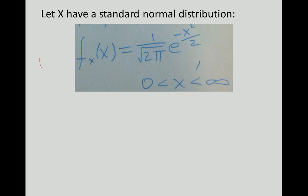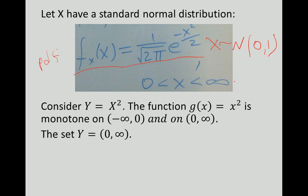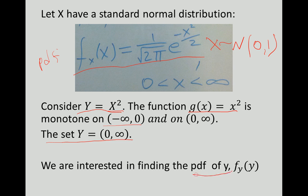Let x have a standard normal distribution. We know this is the probability density function of x, where x is the normally distributed random variable. We are interested in the variable y equals x squared, so our function g of x is x squared. We know it is monotone — decreasing on the interval from negative infinity to 0, and increasing on 0 to infinity. We want to find the probability density function of y on the interval from 0 to infinity.